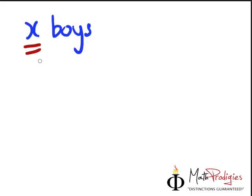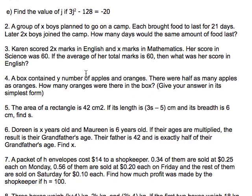We don't know what that number is, so we want to know what that number is. So in this case, let's just put this example just to make sure you understand the question. Let's say a group of ten boys. So we read this. A group of ten boys plan to go on a camp. Each brought food to last for 21 days. Later, two x boys joined the camp.